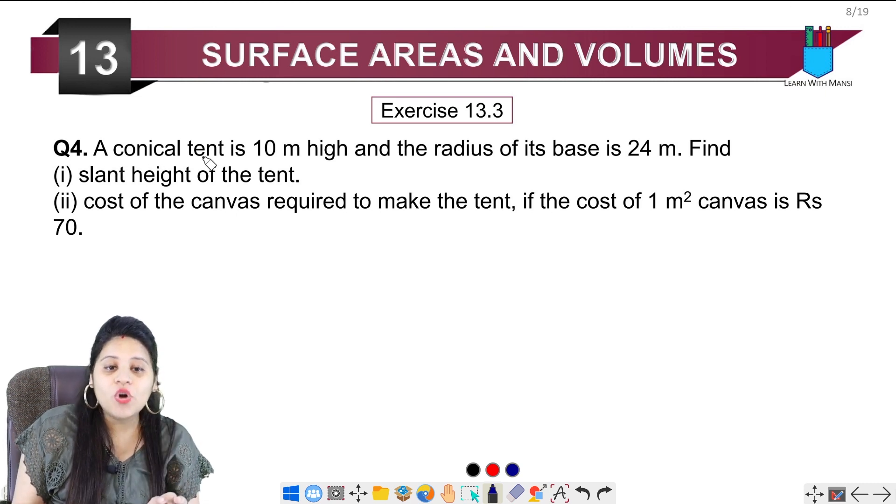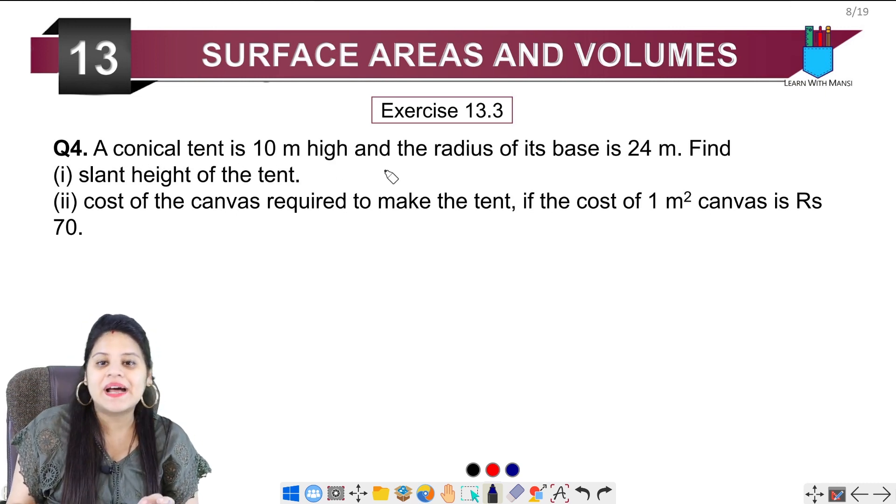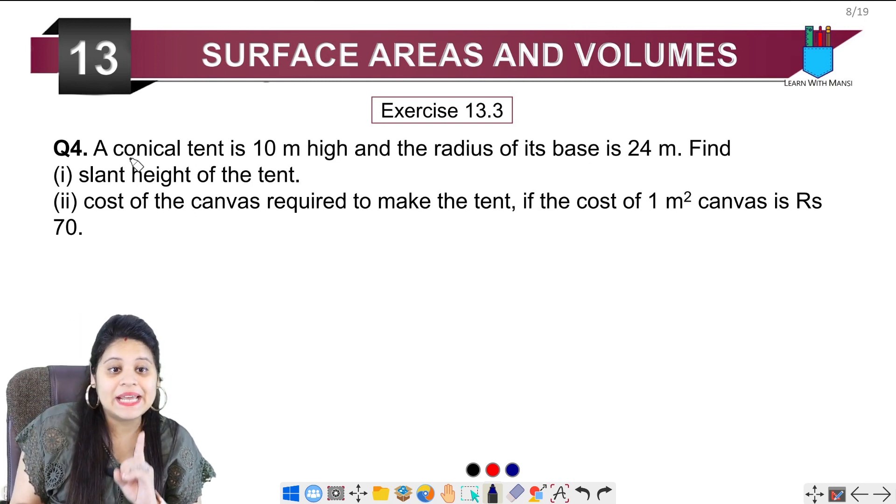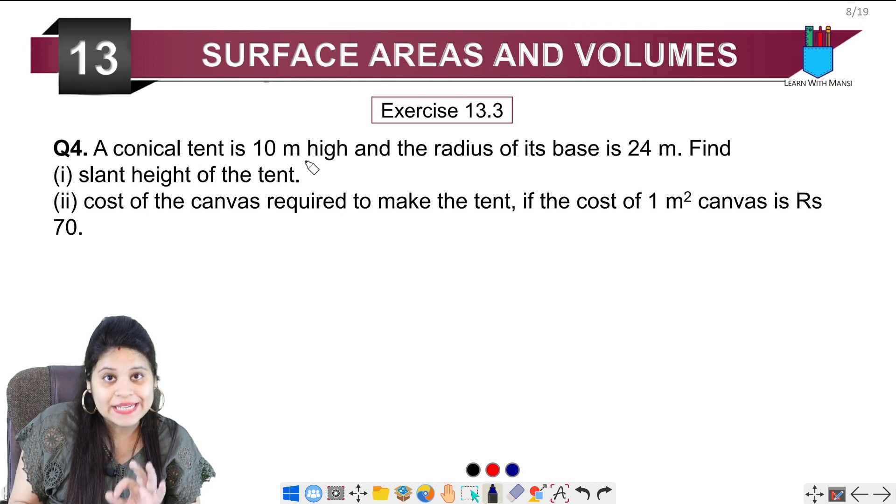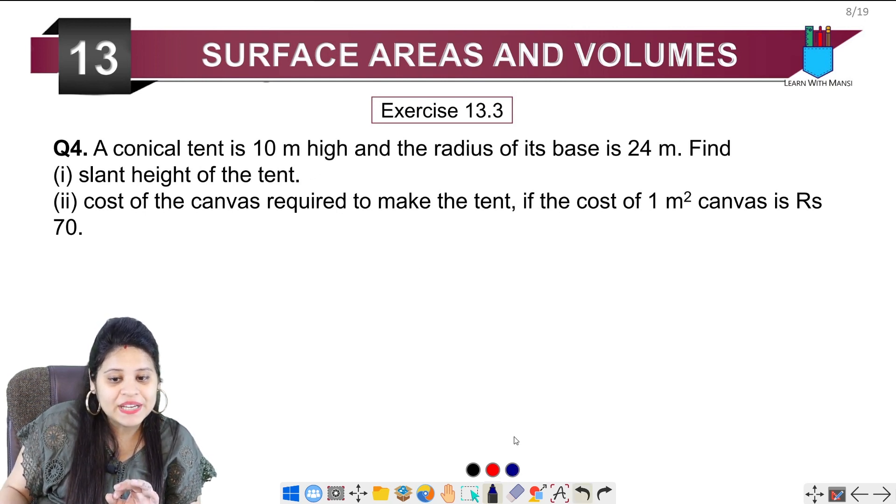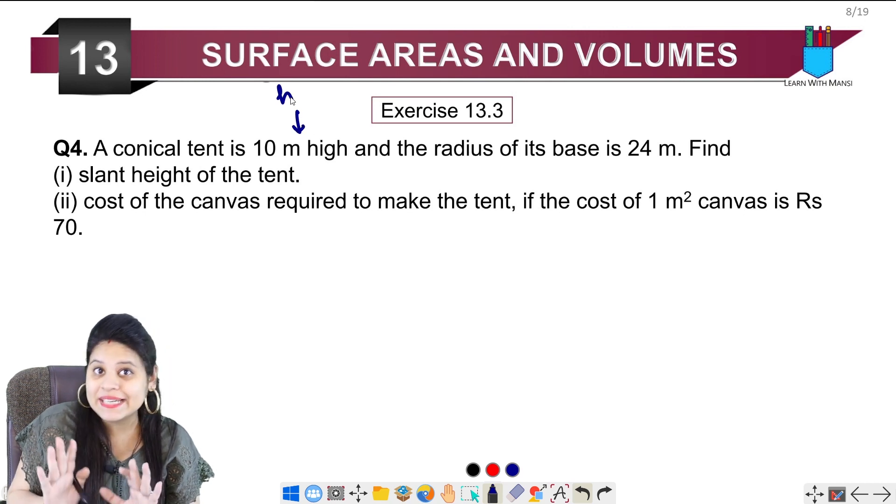The question says a conical tent is 10 meter high and the radius of its base is 24 meter. Here we have to focus on what is given. The conical tent is 10 meter high, so basically the height is given.